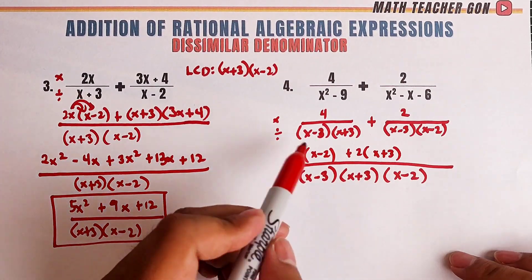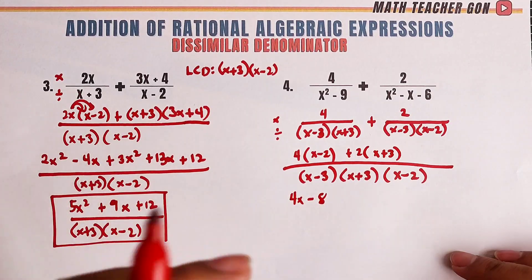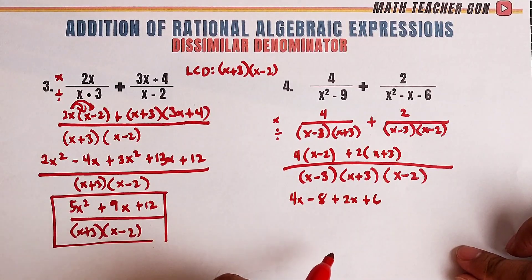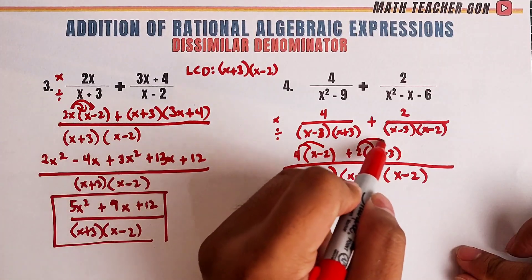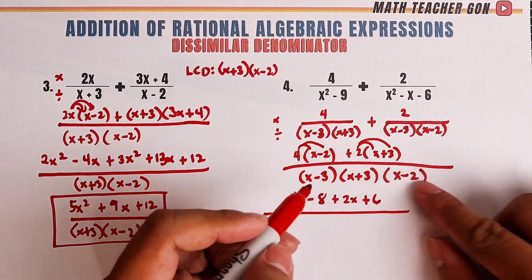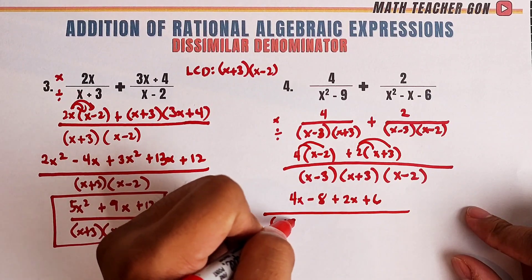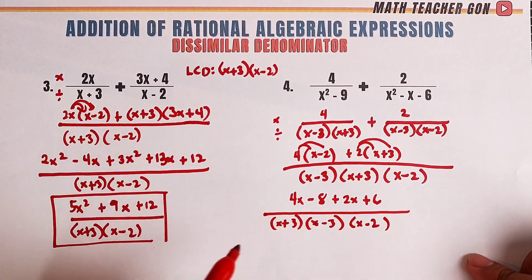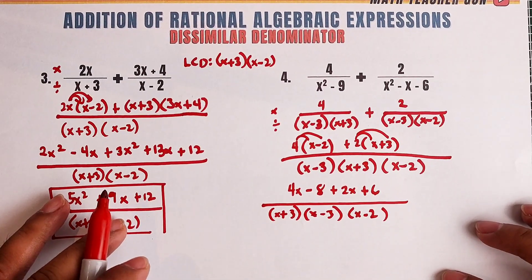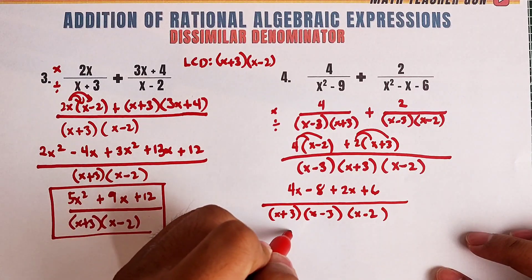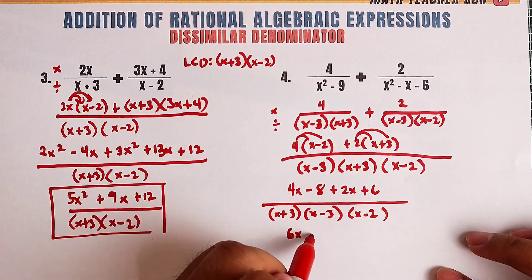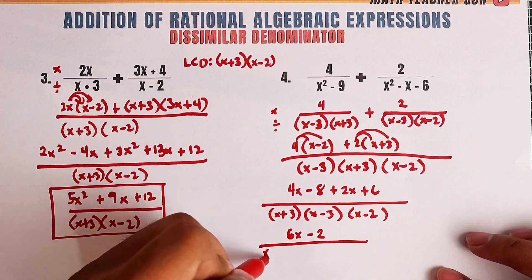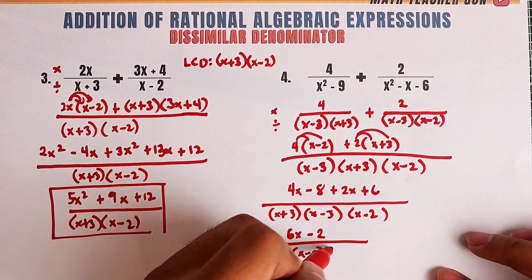Now, we will simplify using distributive property. This is 4x minus 8. Am I correct? Yes. For this one, it's plus 2x plus 6 over, copy these 3 factors, x plus 3 then x minus 3 then x minus 2. Simplify your numerator. 4x plus 2x that would be 6x and negative 8 plus 6 would be negative 2 over x plus 3 times x minus 3 times x minus 2.